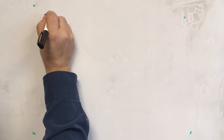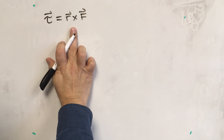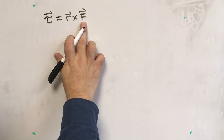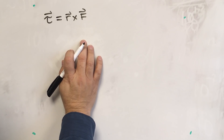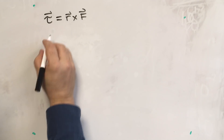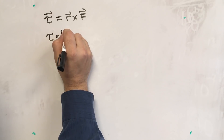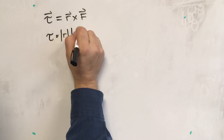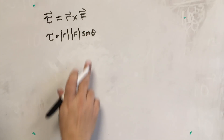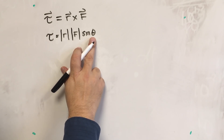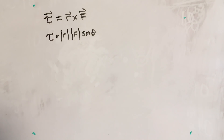As a reminder, torque is a vector that depends on two other vectors: the moment arm of a system and the force that is torquing the system. We use the right-hand rule to give us the vector direction for that torque. When we need to calculate the magnitude, one formula we use is that it's the absolute value of the length of the lever arm times the absolute value of the force times the sine of theta. What we've been struggling with is: what is this angle theta, and how do we make sure we have the right angle?